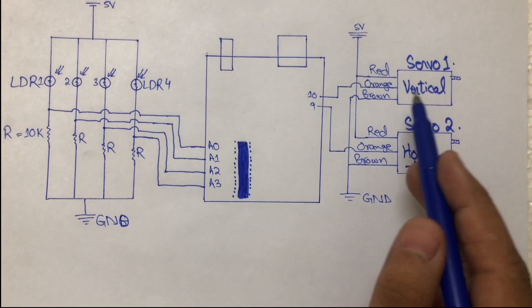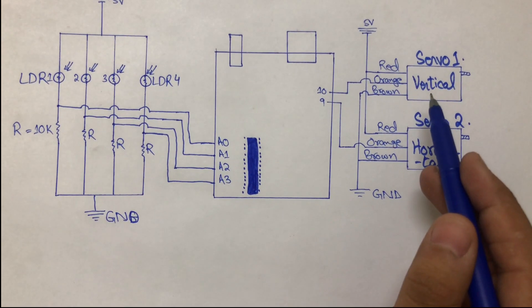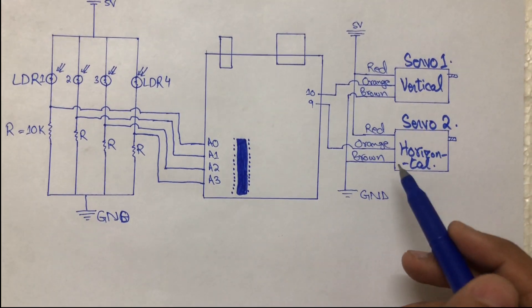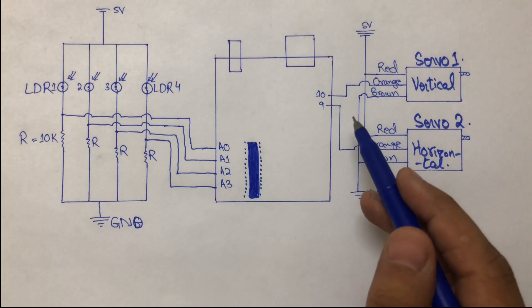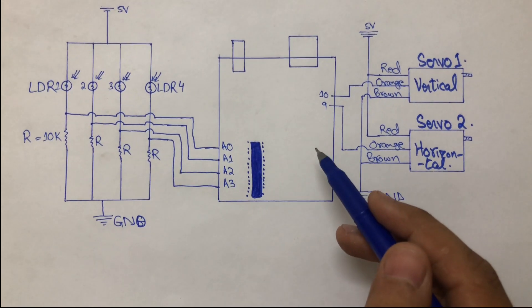Just remember, the vertical motion of the servo motor is controlled by pin 10 and the horizontal motion is controlled by pin 9. In order to work properly, we have to connect these connections correctly.